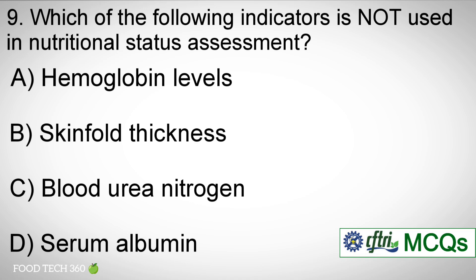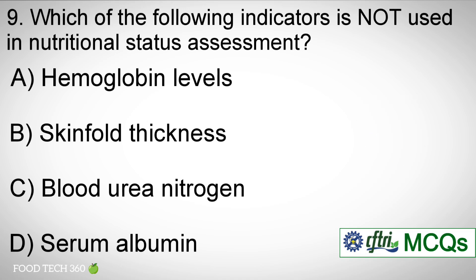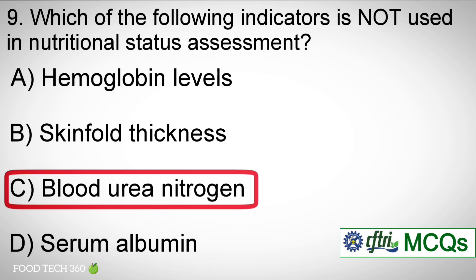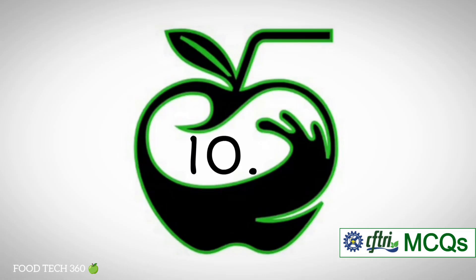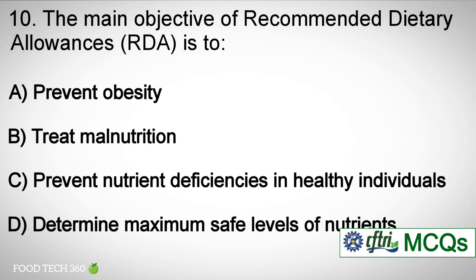Question number nine: which of the following indicators is not used in nutritional status assessment? Options: a) Hemoglobin levels, b) Skinfold thickness, c) Blood urea nitrogen, d) Serum albumin. Correct answer: c) Blood urea nitrogen.